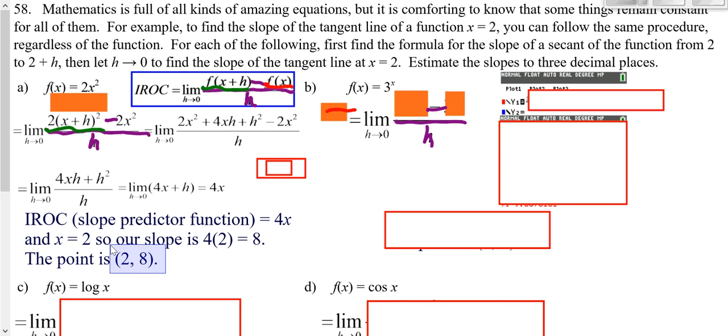You might wonder, how do I figure out the y value of my point? All you have to do is take 2 and plug it into your original function to find the y value. If you're looking for the equation of your tangent line, you use your derivative, your IROC, to find your slope predictor function, plug in your value of x to find your slope, and then you could find your tangent line.